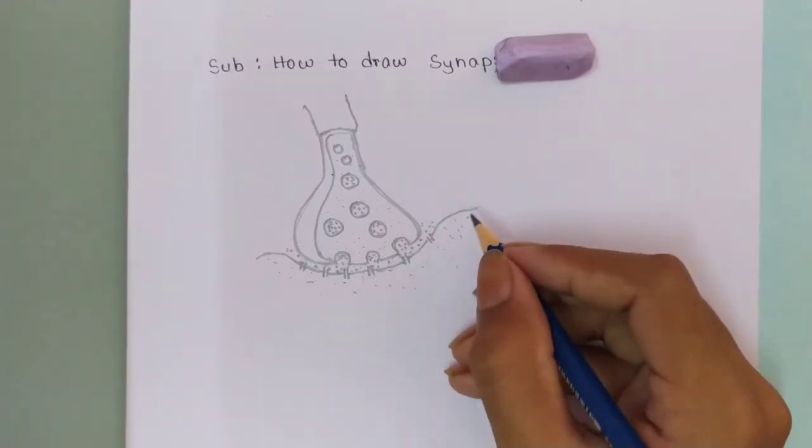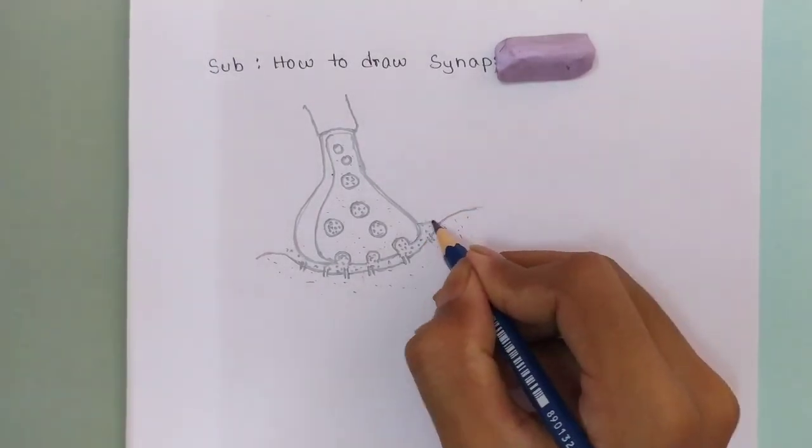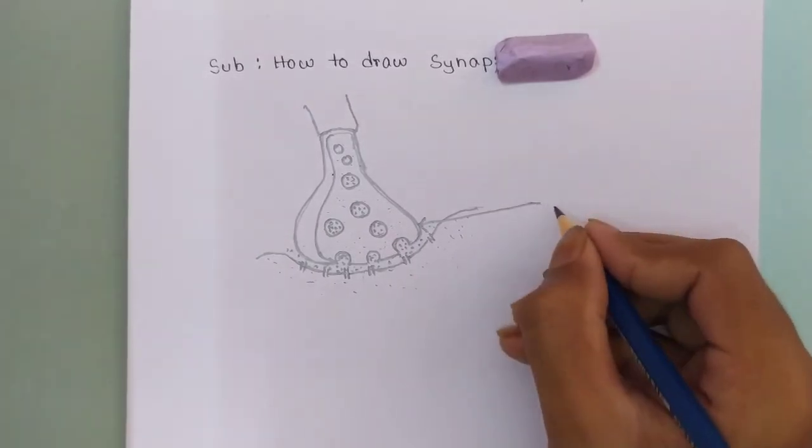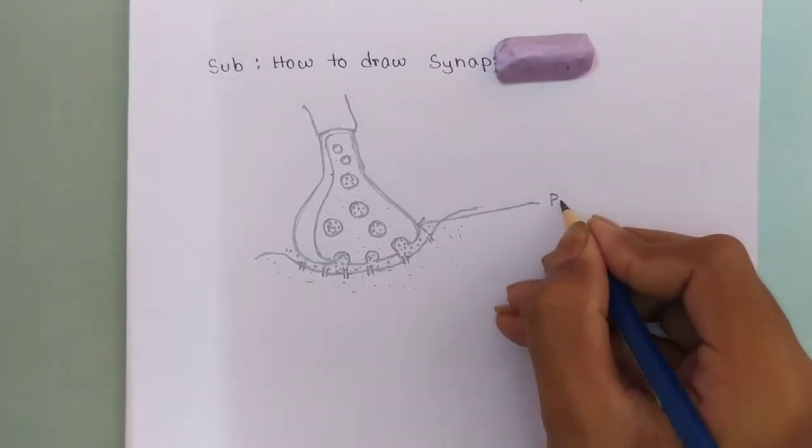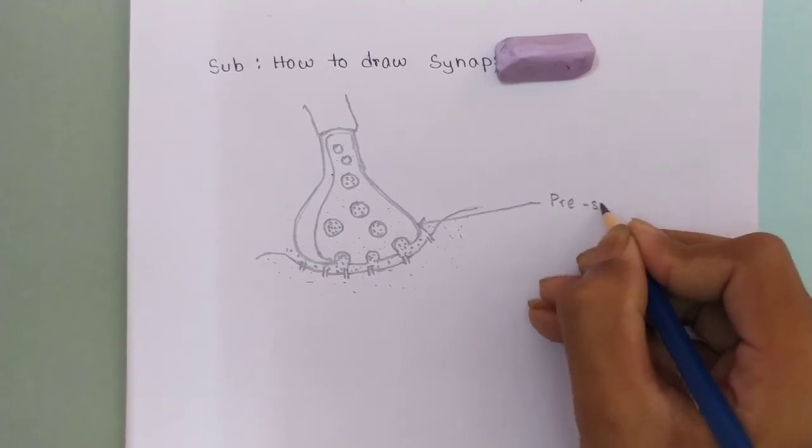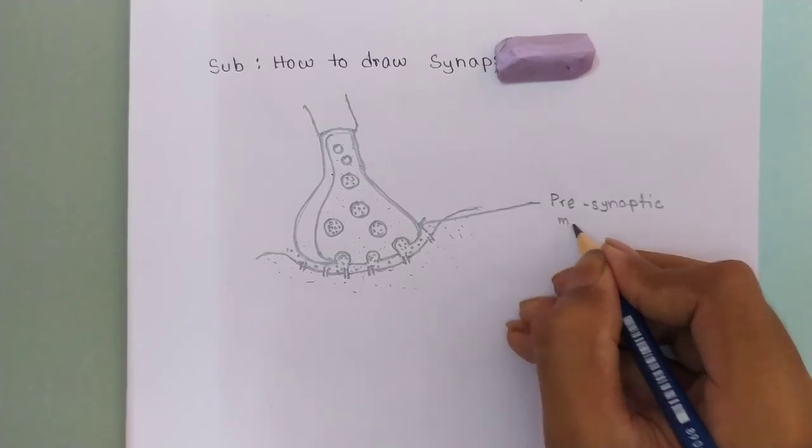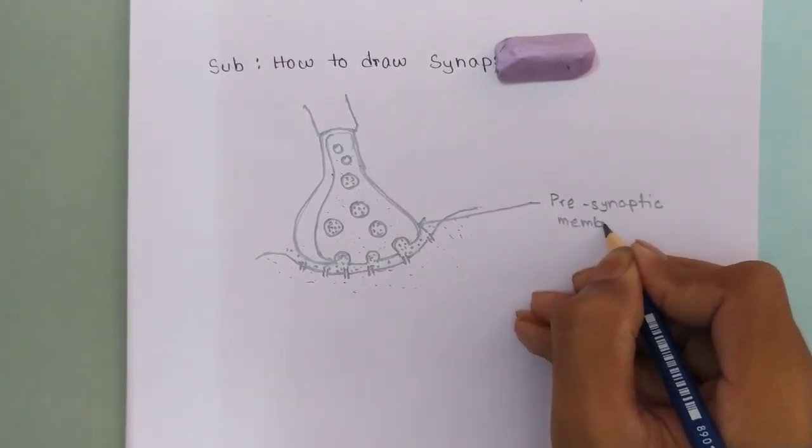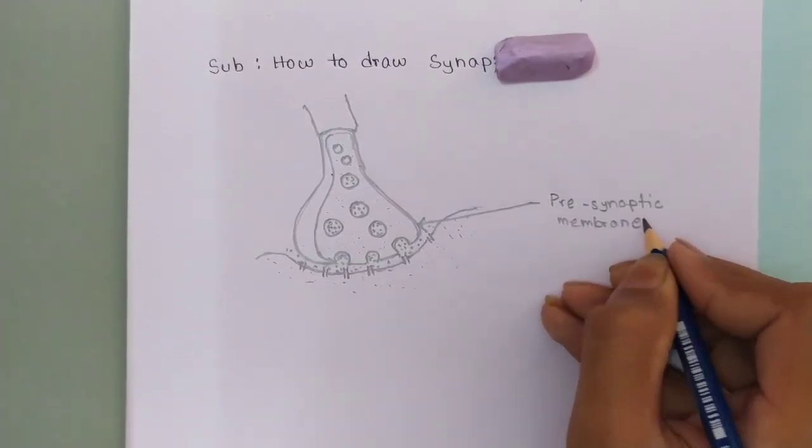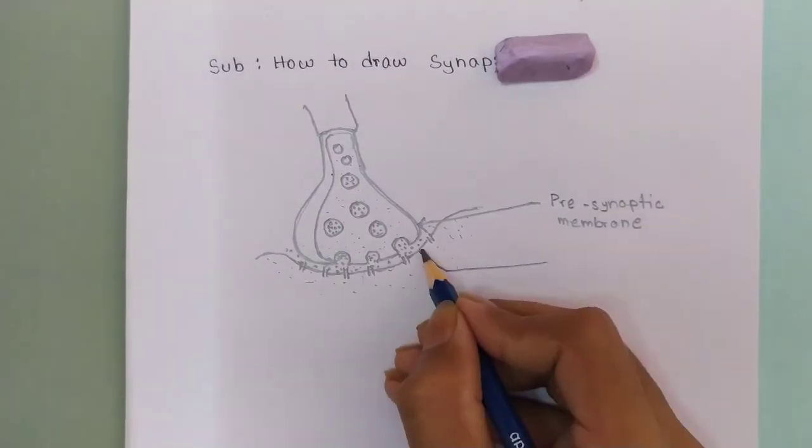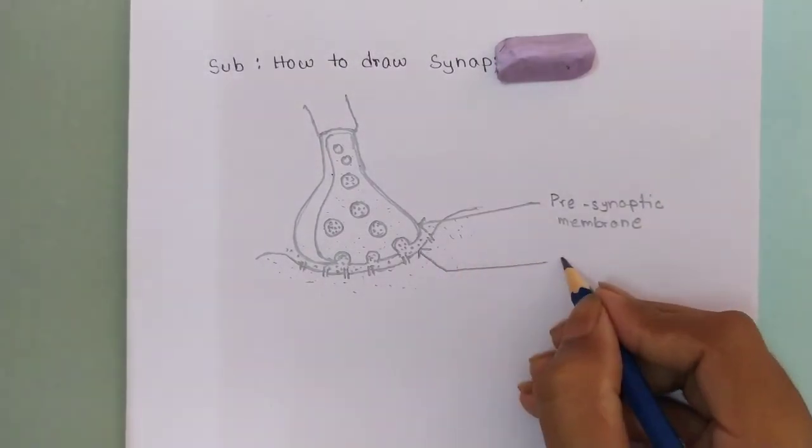Now guys let's label it. So guys this is the presynaptic membrane and guys this one is the post synaptic membrane.